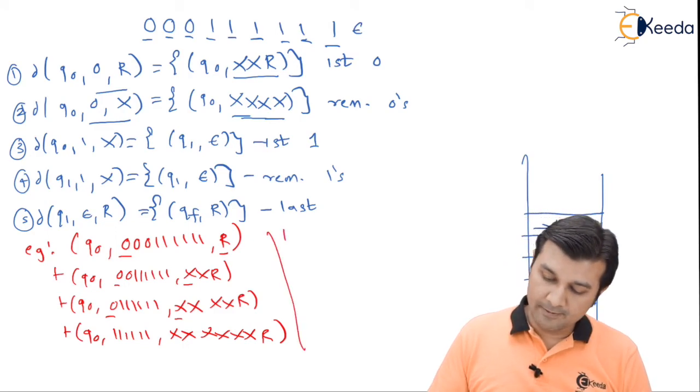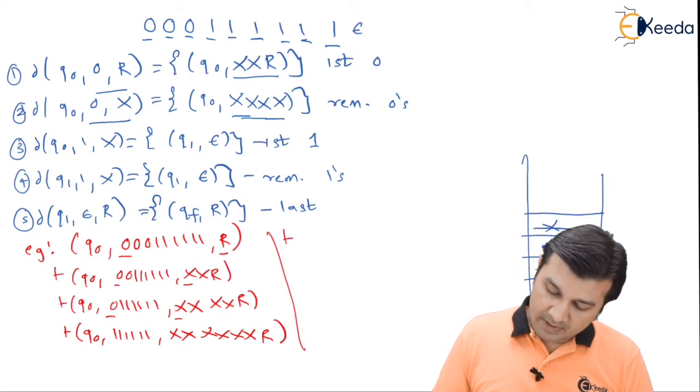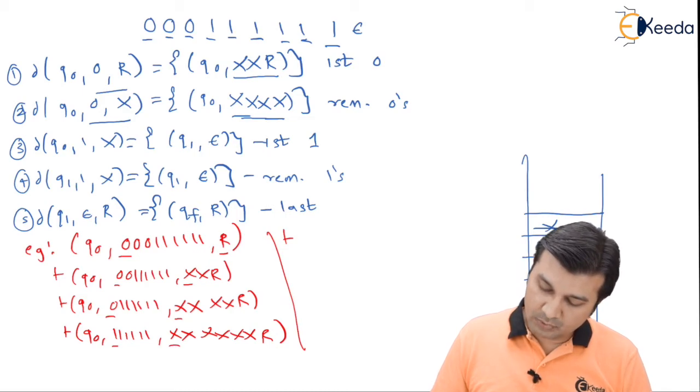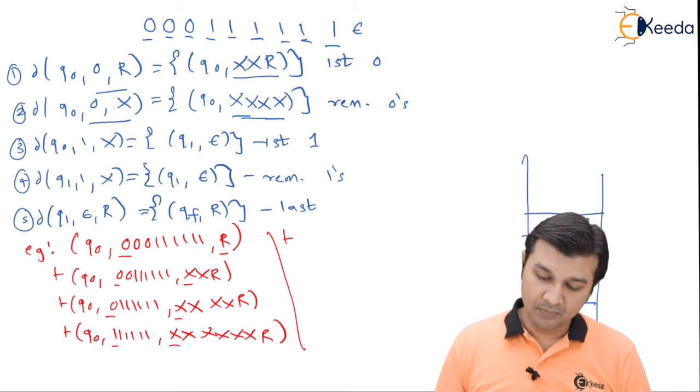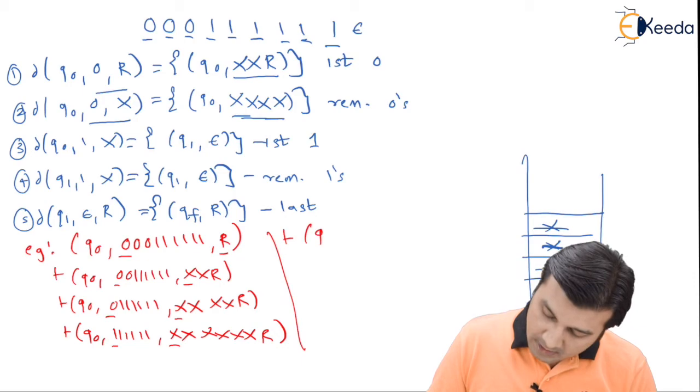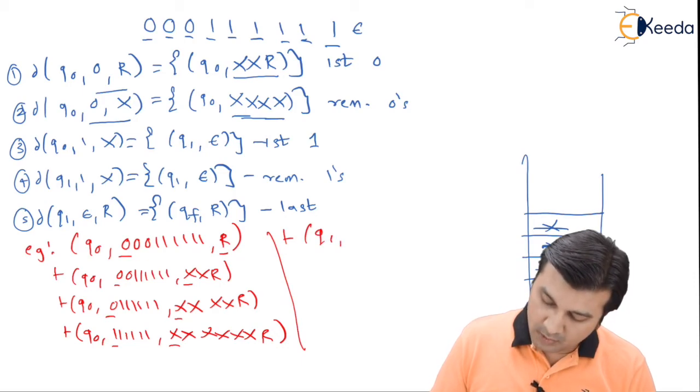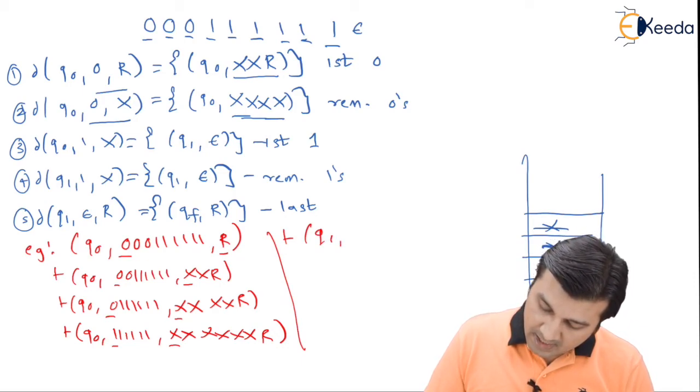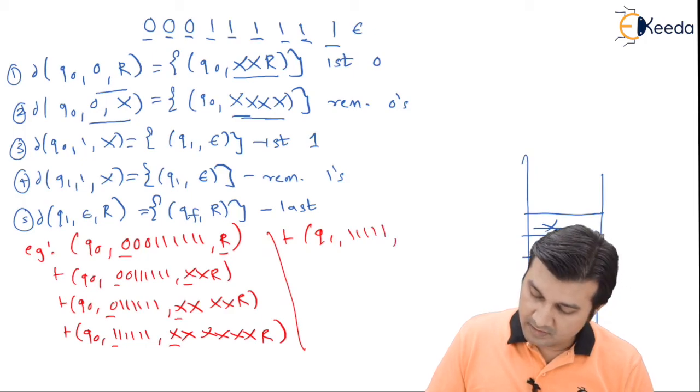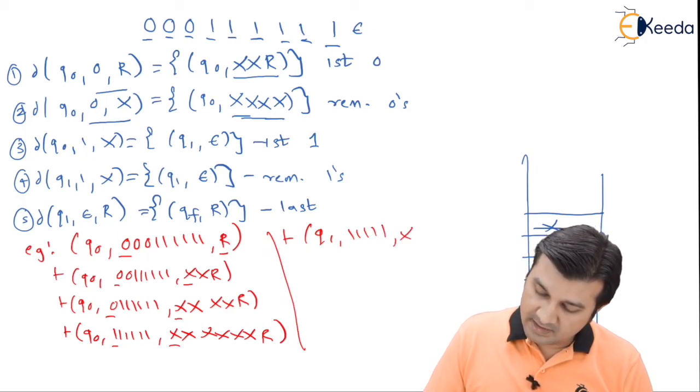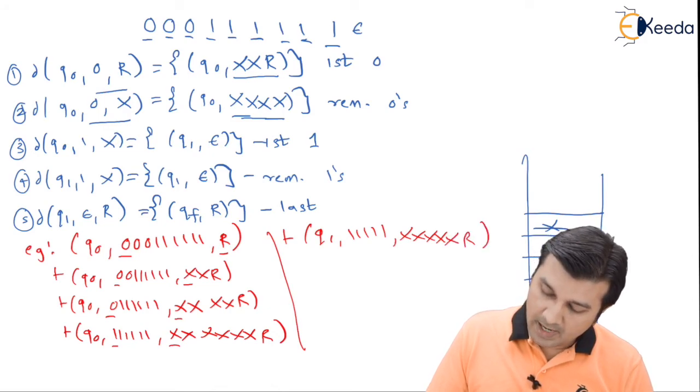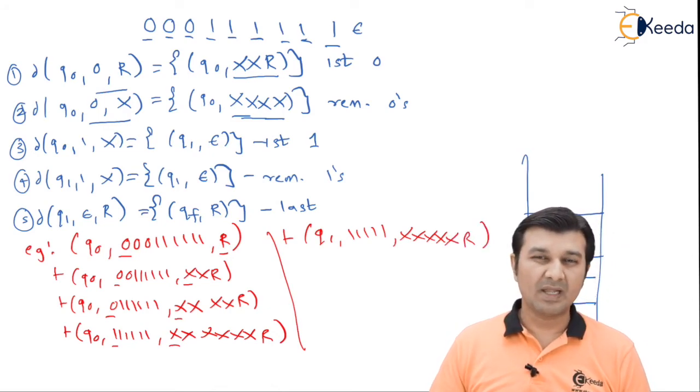Then I have q0 on receiving 0 when the stack top is x, using rule 2, remain in q0. I have six ones and two x's pushed above the 4x and the R. Going ahead, I am in q0, input is first 1 and the stack top is x. Using my rule 3, I say go to state q1, state change. I have five ones left and since x is removed, I have five x's left and a R.